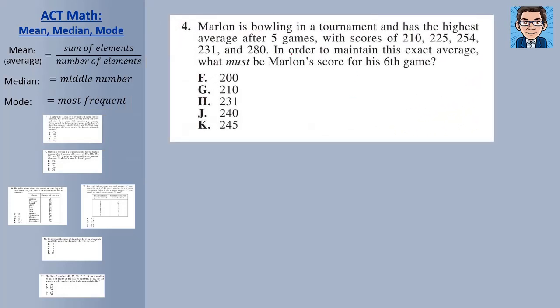In the second problem, we've got somebody who has an average with these five scores. And it's saying, in order to maintain that exact average, what needs to be the score in the sixth game? So let's figure out what this average is. So if we add up 210, 225, 254, 231, and 281, we get a total of 1,000. Divide that by five games, and we have 200.